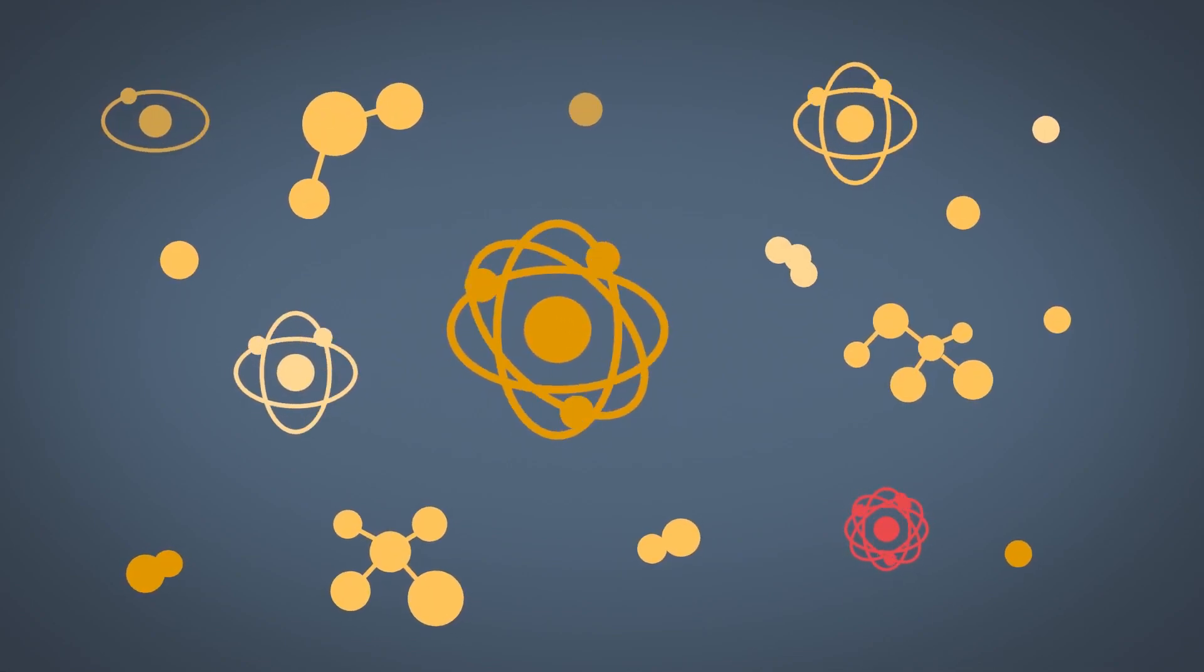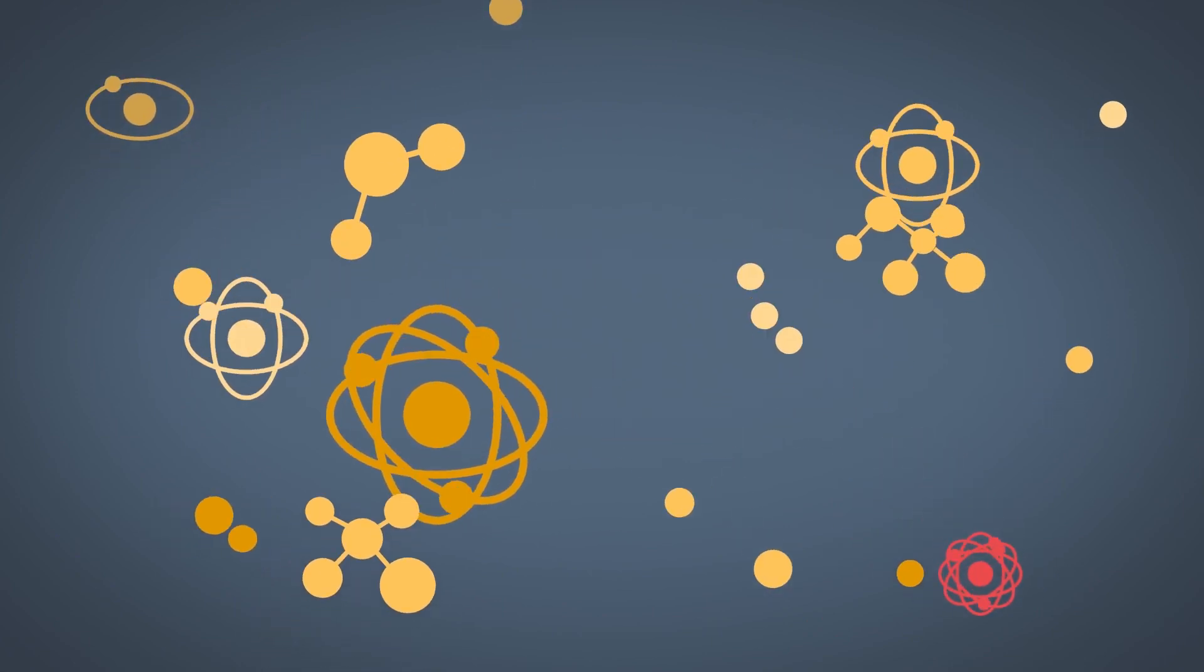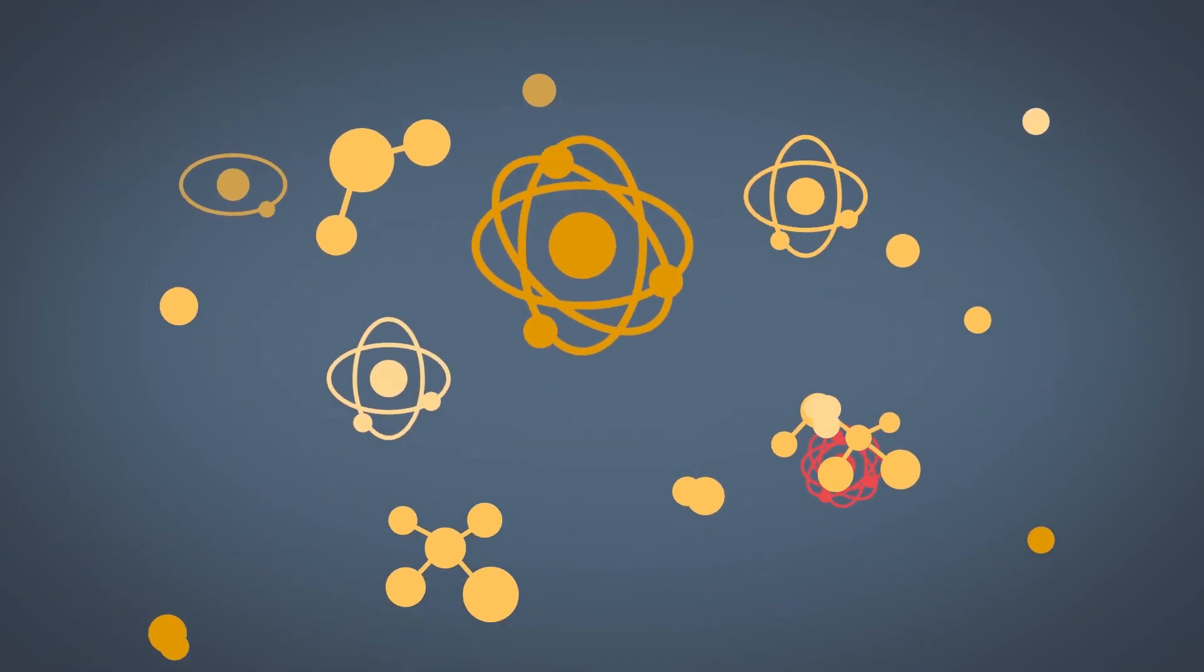As far as we can tell in the subatomic world, everything is just ridiculously and frustratingly random. You look at an electron and sometimes it'll have a spin pointing up, and the next time you look at it, it'll have a spin pointing down. And you're like, can't you just pick one? Why do you have to be both? Why do you have to keep flipping back and forth?